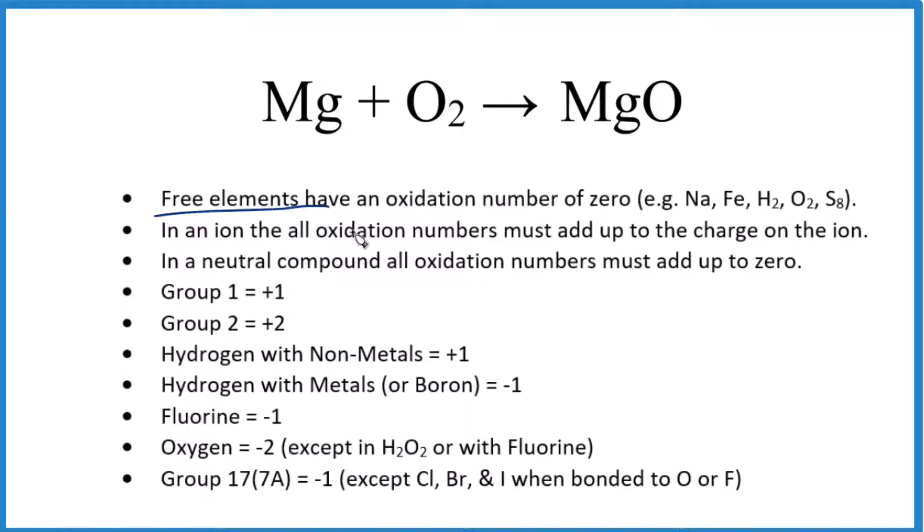When we have free elements, these are elements that are just one type of element, Na, Fe, H2, O2, they're going to have an oxidation number of zero. So magnesium, that's zero, and oxygen is zero.